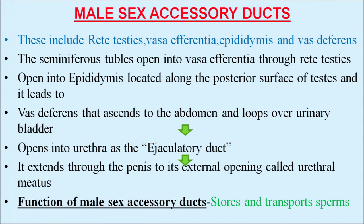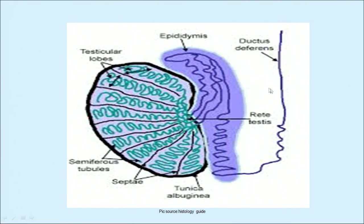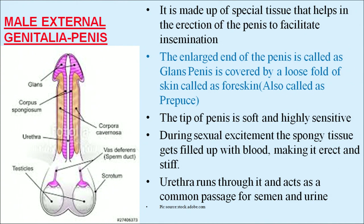The vas deferens opens into the urethra as an ejaculatory duct and extends through the penis to its external opening called the urethral meatus. The function of male sex accessory ducts is not only to store sperm but also to transport them. In the picture you can see the sex accessory ducts: testicular lobules distinguished by septae, tunica albuginea as the outermost covering, starting with rete testis, epididymis, and finally vas deferens shown as ductus deferens.